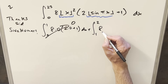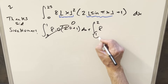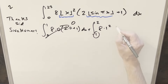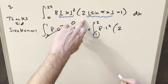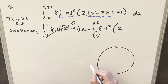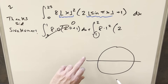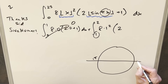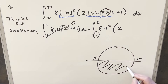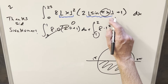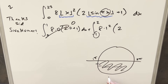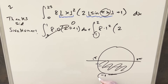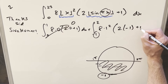For the second integral from 1 to 2, we have 8 out front. The floor of x rounds down to 1, so we get 8 times 1 squared. For the sine part, the input πx is between π and 2π — that's quadrants 3 and 4 — so sine is negative, between -1 and 0. The floor rounds this down to -1. So we get 2 to the power (-1 + 1), times dx.